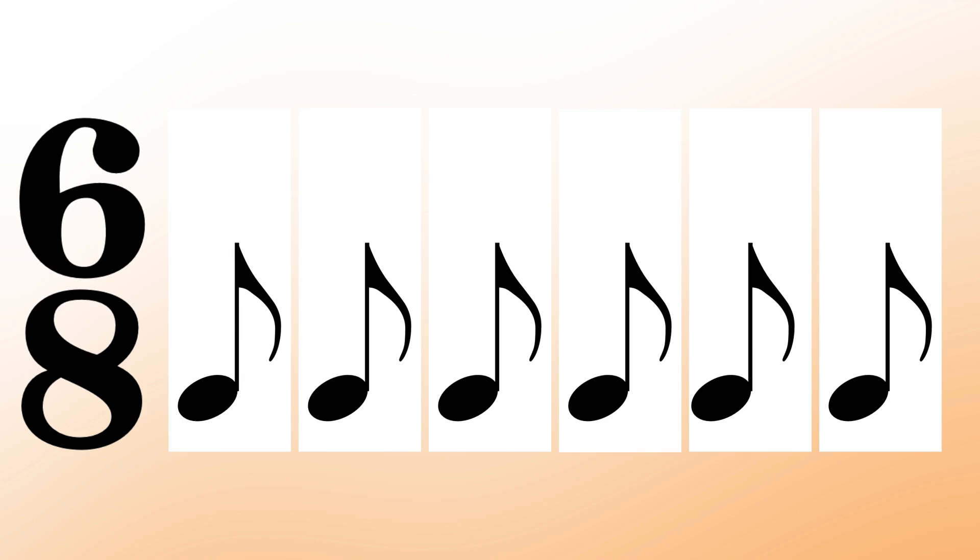The concept is the same for 6/8, only our time signature and note values are different. We know that there are six beats per measure and the eighth note gets one beat. For demonstration purposes, we will show one 6/8 measure like this — each of these boxes represents one beat. Since the eighth note is worth one beat, we can assign one eighth note per box or per beat. We count their place in time.